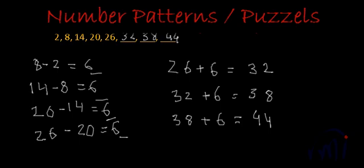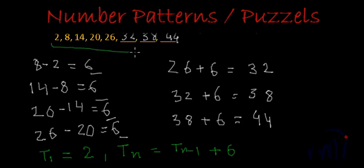We will also learn the generalized method of writing these kinds of patterns. So how to write it? Here, first term, that is T1, is constant, that is 2. And after this, every term, let us generalize it as Tn, is actually equal to Tn minus 1, that is the previous term, plus 6. So this is the series, and here we have found the difference between two consecutive terms, which was 6, and then we found the next three terms of the series, which were 32, 38 and 44. And we have done one more thing, which is writing the series or writing the pattern in generalized format.